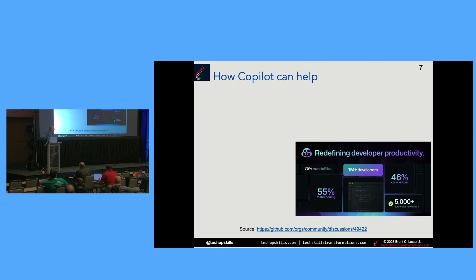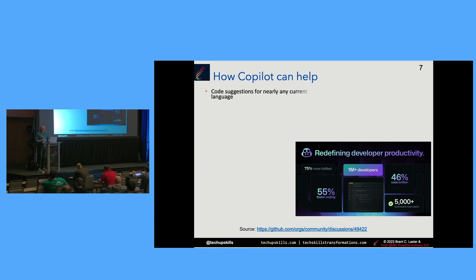So how can Copilot help? What kinds of things can it do in your day-to-day activity? You've got the advertised benefits: 55% faster coding, 46% of code written, and so on. Here are some of the things I've seen it do: code suggestions for nearly any current language. The basic idea is I'm typing in my IDE and Copilot is suggesting code based off of the context I have, popping up code suggestions in the editor as I type.